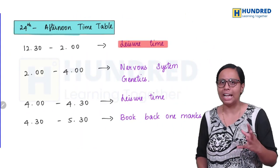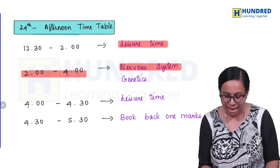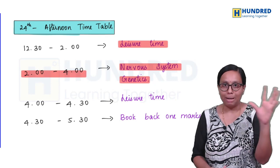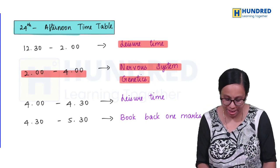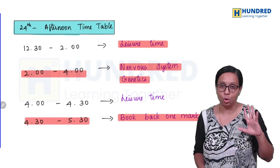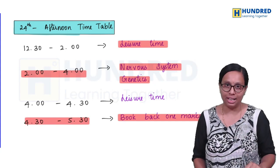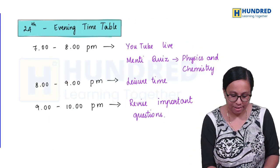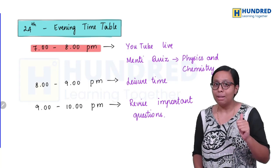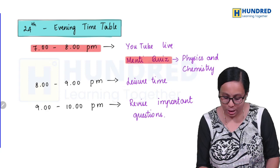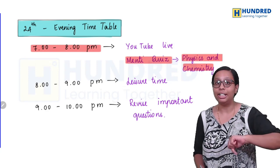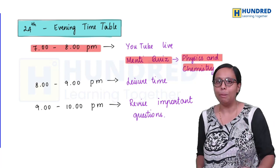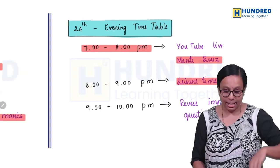Then you'll be studying transportation in plants and circulation in animals. These chapters are big, will take time. You'll be covering these three chapters. Afternoons, take a short nap if possible. 2 to 4, nervous system and genetics. These two chapters are easy to study compared to others. We'll cover all concepts. Take a break and most important thing, book back one mark questions revision. Book back, maximum questions will come.